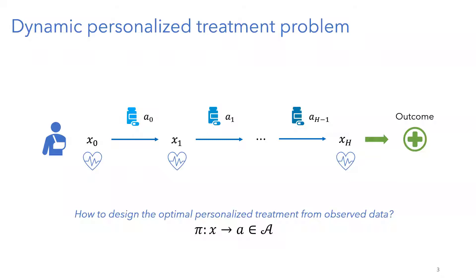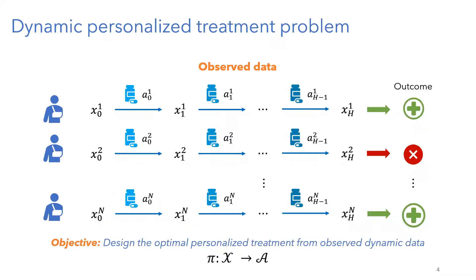The question is how to find from historic data the optimal treatment policy — which means for any new patient that comes with some given features, I want to know what is the optimal treatment to prescribe. The data we observe is multiple paths of different patients through the healthcare system, with different actions and treatments given, different features observed, and then an outcome. The question is: from this historical clinical data, can we actually design the optimal treatment?